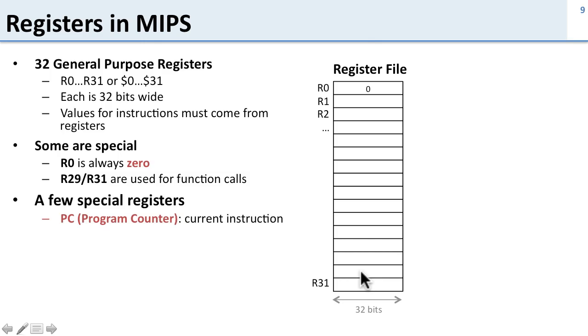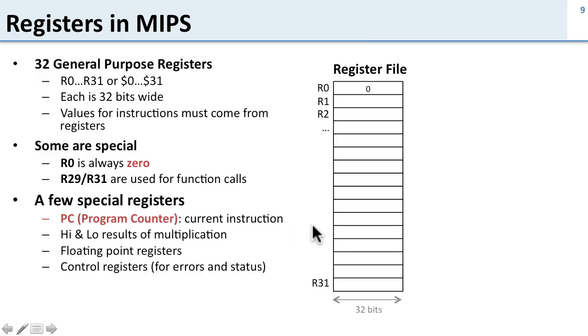In addition to the register file MIPS has a few special registers. So the PC or the program counter is a register which keeps track of the current instruction. That's how the program knows where it is in the program. There are some other ones for multiplication, floating point, control registers. But we're not going to go into the details of those. So two very important things to remember here. All the values for instructions need to come from registers and R0 is always zero.